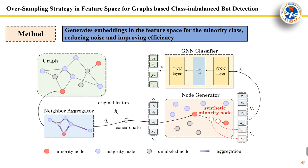The method we propose is called OSGNN. First, feature aggregation is performed, and the output of aggregation is concatenated with the original features. At this point, the node features contain information about the edges. The SMOTE algorithm is used to synthesize minority class nodes in the feature space to balance the data distribution. Finally, a graph neural network classifier is used to classify the expanded sample set.